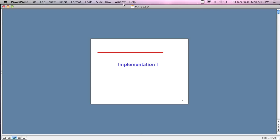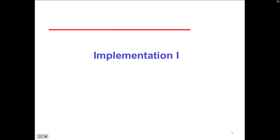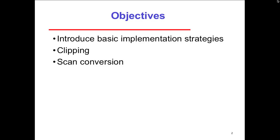Today we are doing lectures 21, 22, and 23 — I call them Implementation 1, 2, and 3. This is about putting all the concepts together, talking about things like clipping and buffering and the different techniques when we render images. Part one looks at the basic implementation strategies: the concept of clipping and the concept of scan conversion.